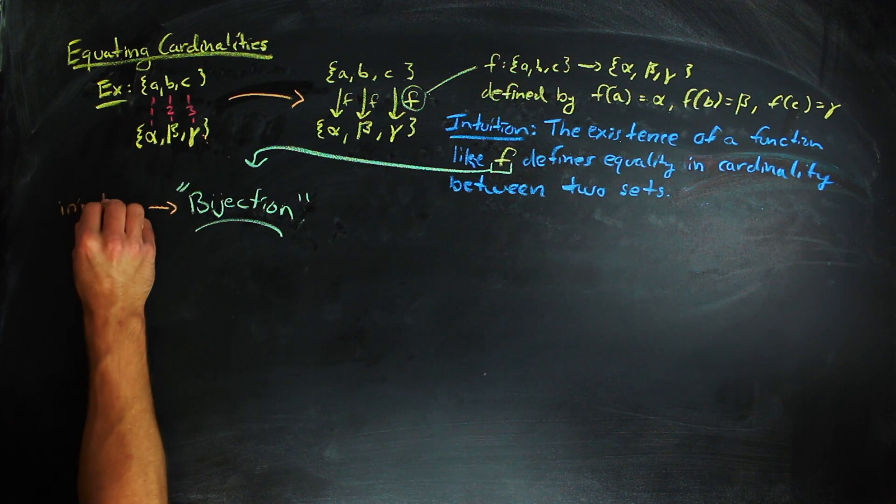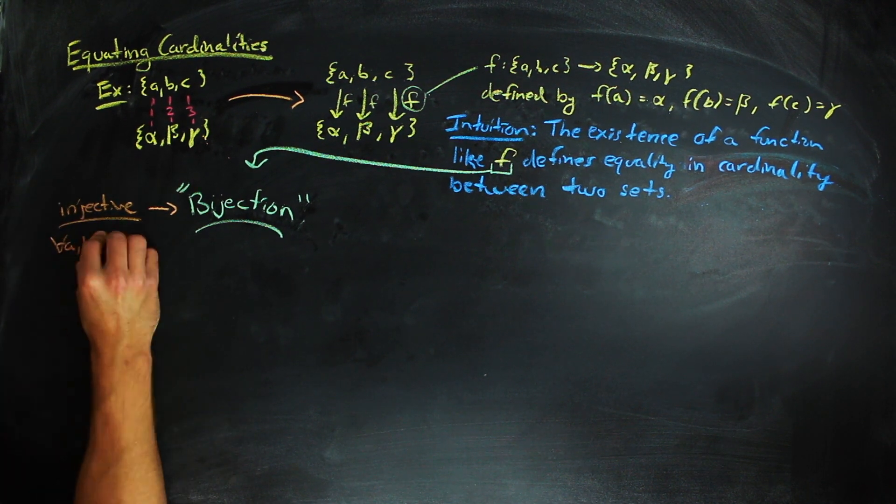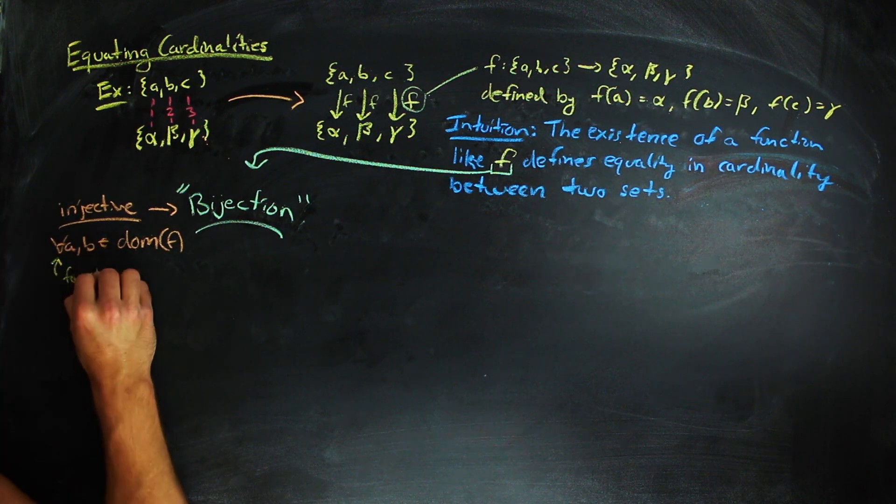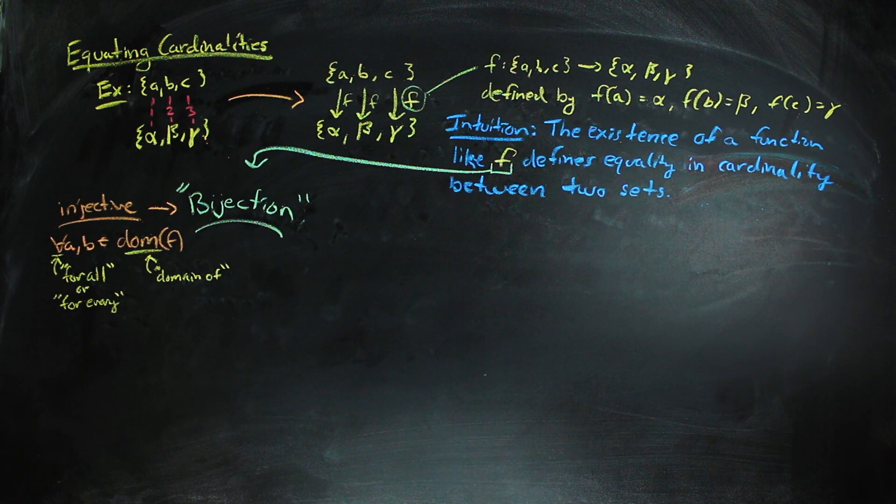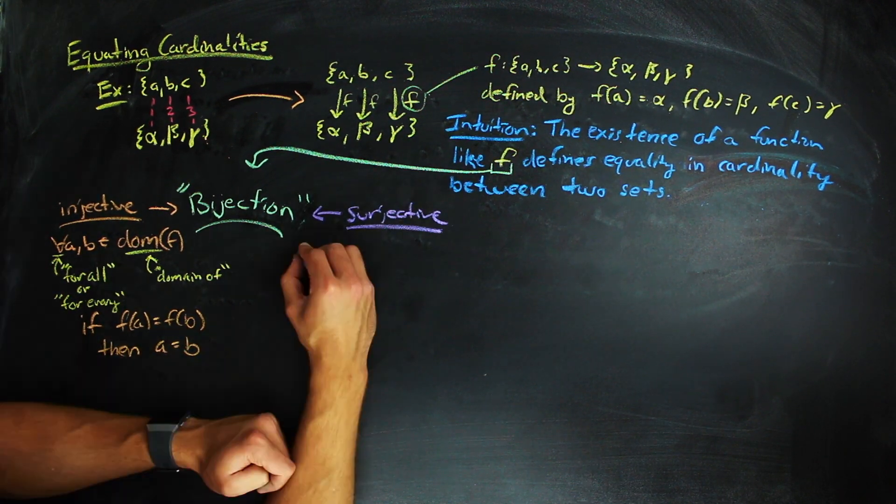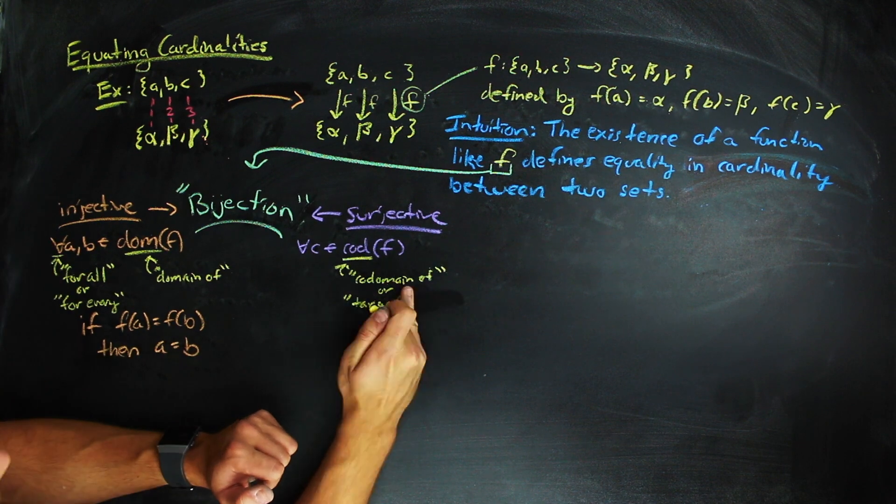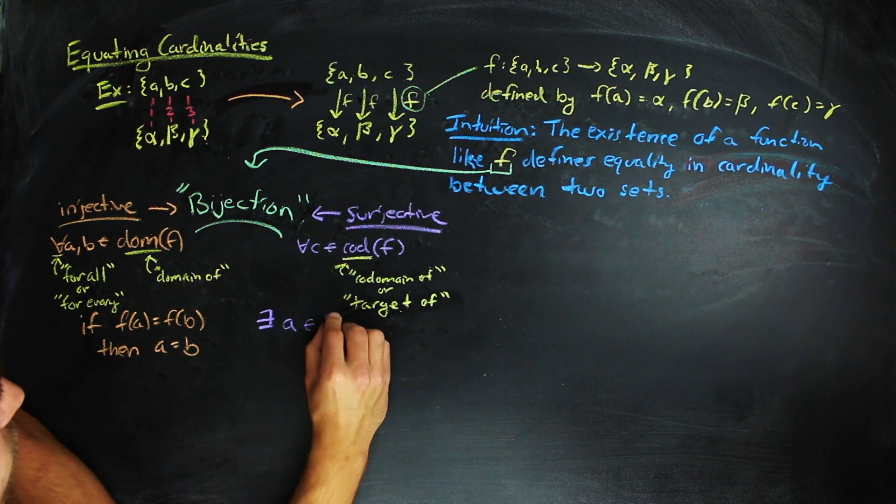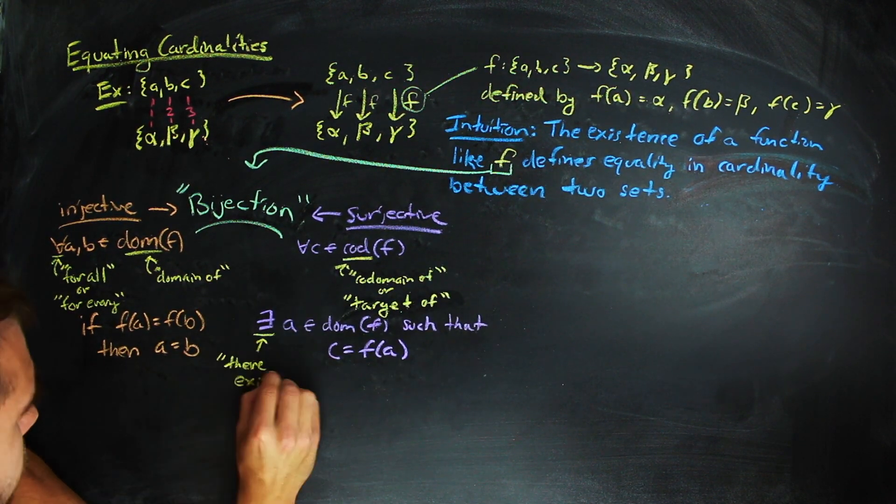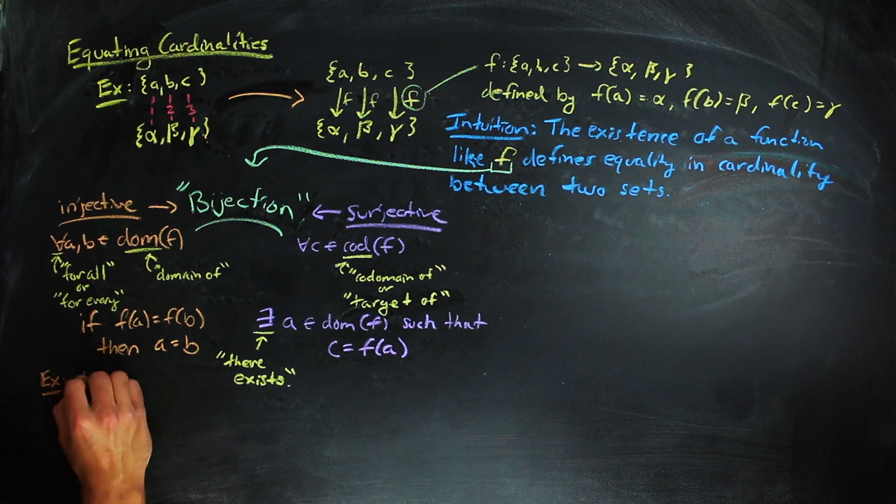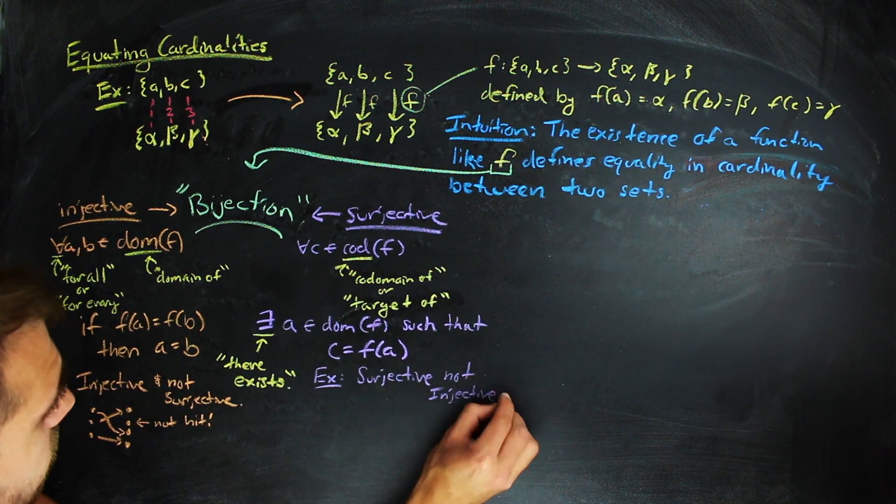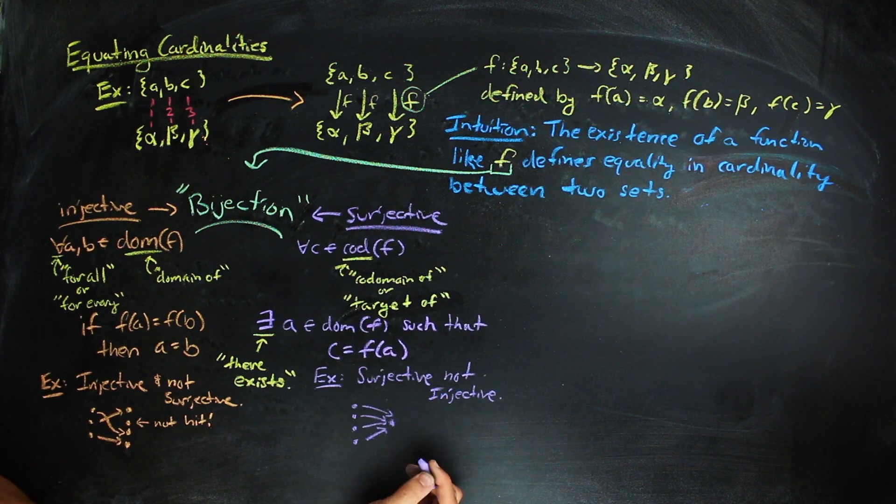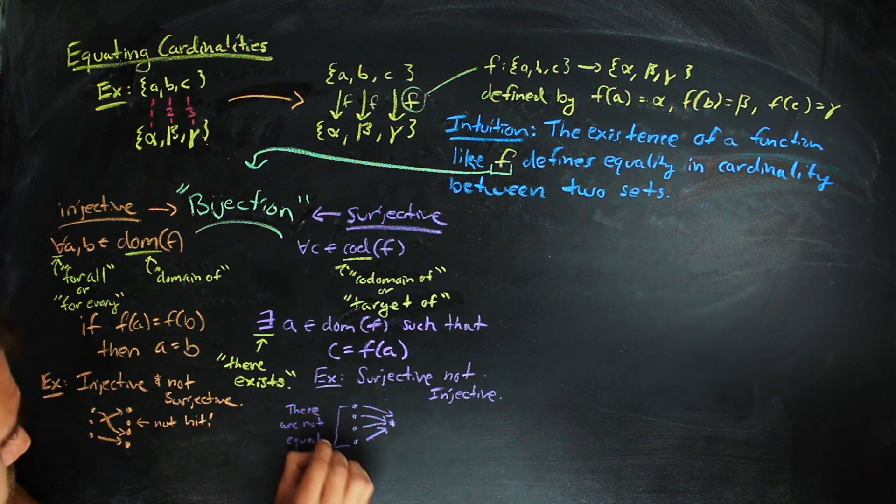Meaning if two things in the domain are sent to the same thing in the co-domain, then those two things in the domain were actually equal. And it's surjective, meaning that for each thing in the co-domain, there is something in the domain that is sent to it by the function. Here is an injection that is not a surjection, and here is a surjection that is not an injection, just to give you an idea of why these things are two different properties.